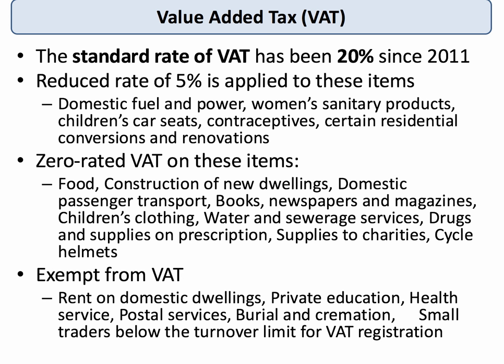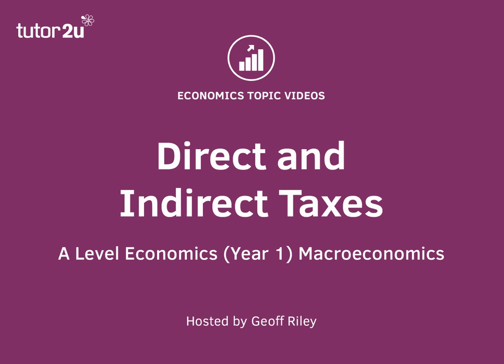Some items are completely exempt from value-added tax — so rent on housing, school fees, stamps, burial and cremation services. Small businesses such as a small café may be below the turnover limit for VAT registration and therefore don't have to pay VAT. So income tax and value-added tax are two good examples of the difference between direct and indirect taxation.